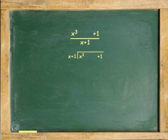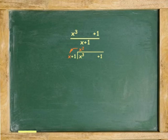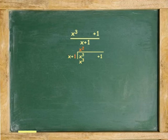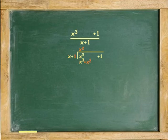Then start like before. x cubed divided by x is x squared. Multiply x squared by x is x cubed. x squared by 1 is x squared. Subtract. Cancel the x cubed. Bring the x squared down. This is the end of the first cycle.